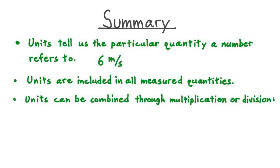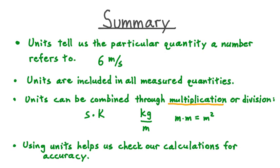Another thing we learned was that units, just like numbers, can be combined through multiplication or division. We could take a time in seconds, for example, and multiply that by a temperature in kelvin, or we could take a mass in kilograms, say, and divide that by a distance in meters. As a special case of unit multiplication, we also saw that a unit can be multiplied by itself. Say we have a distance in meters, and we multiply that by another distance in meters. Then in this case, the final unit would be meters times meters, or meters squared. And lastly, we saw that when we use units, they help us check our calculations for accuracy.